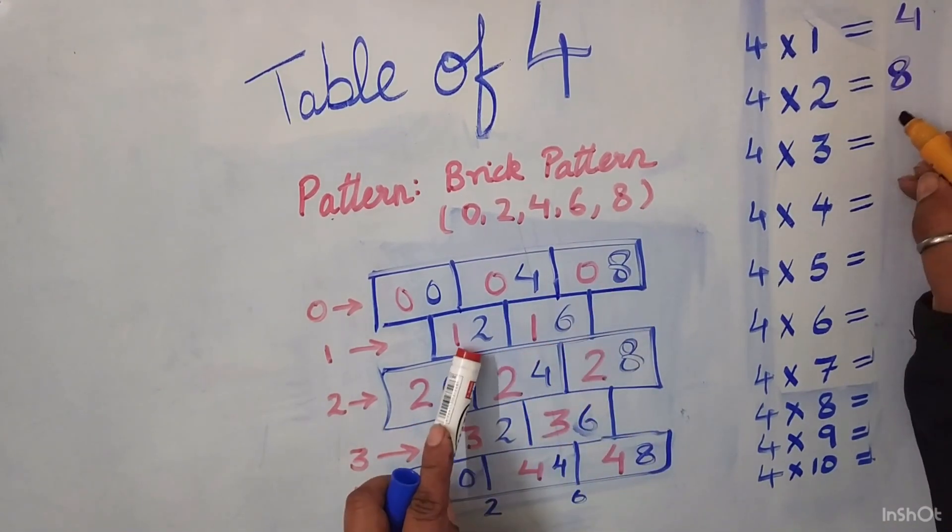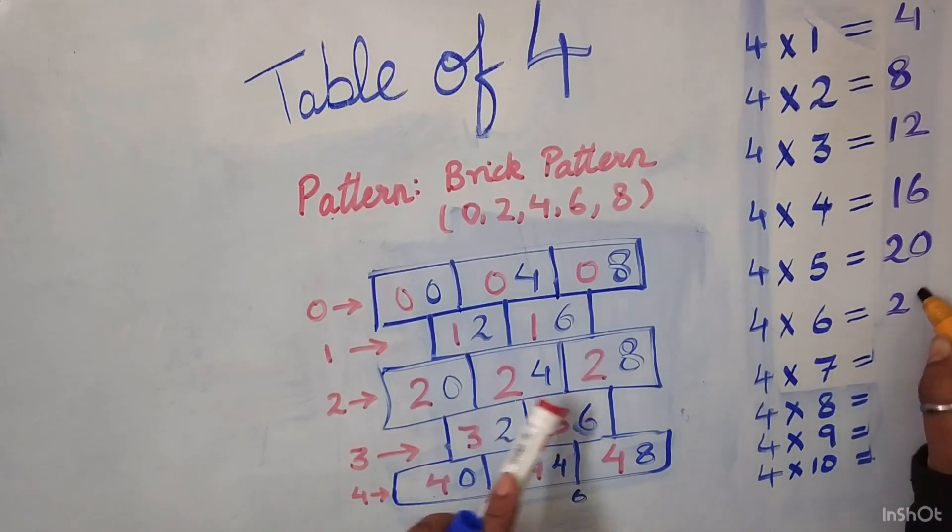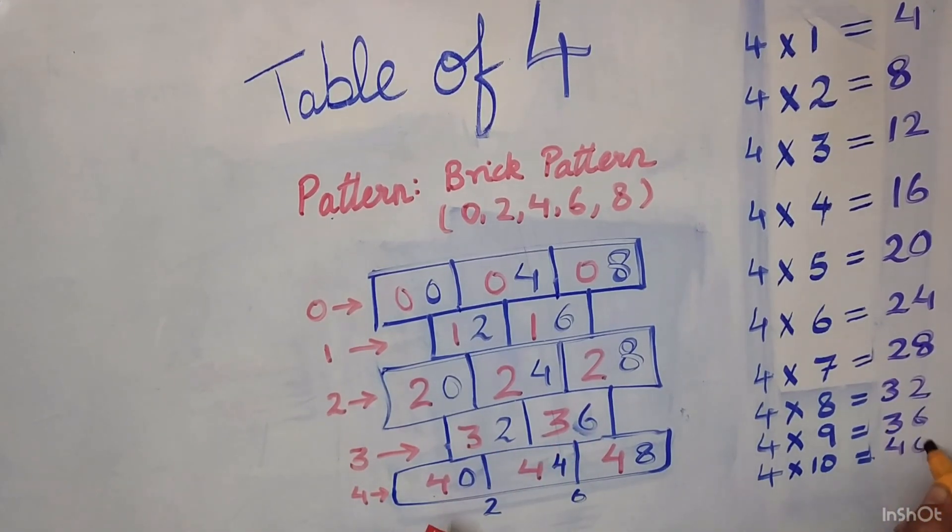Now we will start from the centre brick. 4 1's are 4, 4 2's are 8, 4 3's are 12, 4 4's are 16, 4 5's are 20, 4 6's are 24, 4 7's are 28, 4 8's are 32, 4 9's are 36 and 4 10's are 40.